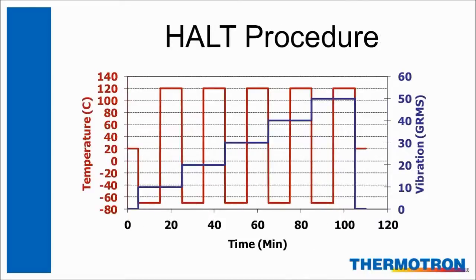An additional HALT procedure is to add hot and cold rapid thermal transitions to the vibration. The red line shows the temperature being ramped from hot to cold every 10 minutes, while simultaneously stepping up vibration every 20 minutes, shown here in blue. HALT chambers are used to create stresses of extreme temperature range, extreme temperature ramp rates, and random 6-axis repetitive shock vibration simultaneously. These same chambers, with some modifications, are also used in HASS.